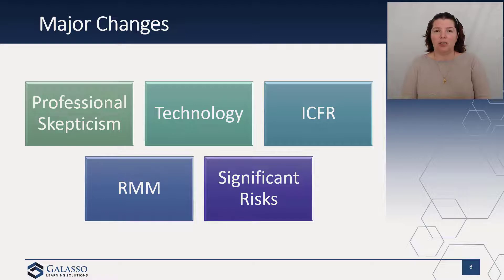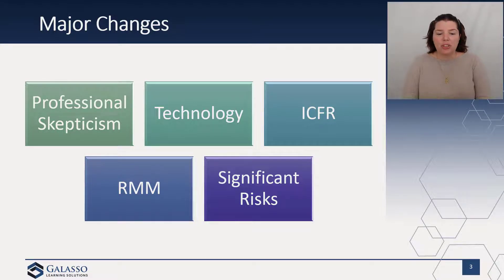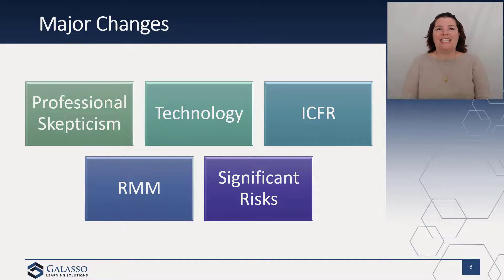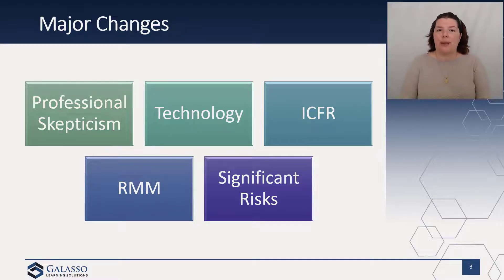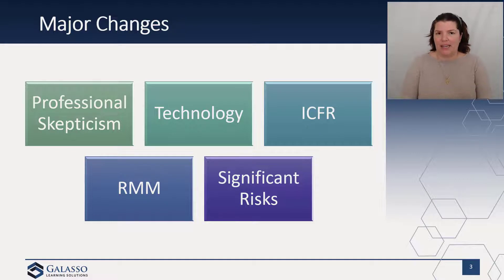Whether that's a commercial off-the-shelf product or a high-end ERP system, we're going to have to figure out how inherent risk plays into this. When we think about the susceptibility of assertions, we have to understand it in relation to both the financial reporting framework and the IT system. Inherent risk factors — introduced in SAS 143 for auditing estimates — are now rolled out for all risk assessment. There are now inherent risk factors regarding the susceptibility of assertions to misstatement, and we have to evaluate these risk factors. Many of these have been in third-party practice aids for years; now they're just more explicit.